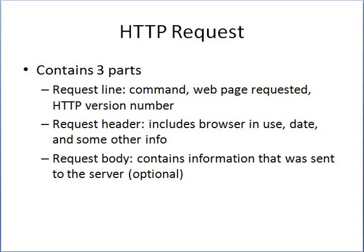The HTTP request contains three parts. The first is the request line, which includes a command, the web page requested, and the HTTP version number. The request header includes the browser in use, the date, and some other information useful to the server. The request body is optional and contains information that is sent to the server.